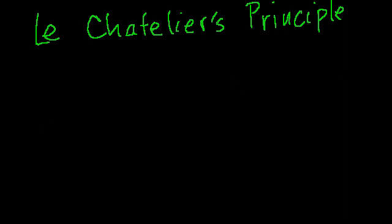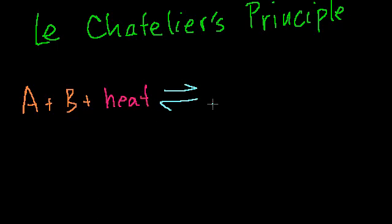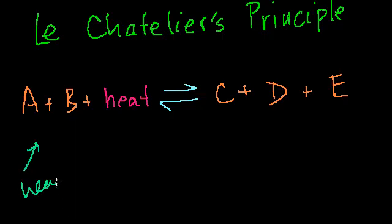So given Le Chatelier's principle, let's think of some other situations. Let's say if I had A plus B plus some heat, and that produces some C plus D, and maybe it produces some E as well. So if I were to add heat to this system, what would happen? In order for the reaction to progress in the forward direction, you need heat. The more heat you have, the more likely you're going to progress in the forward direction.